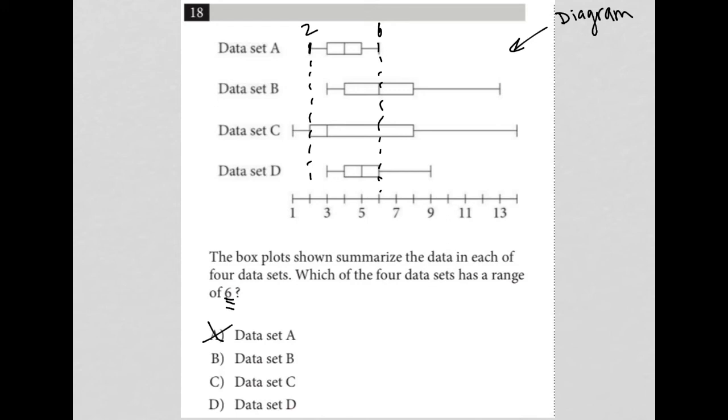Data set B lines up with three. And the highest value lines up with 13, which is a distance of 10, right? Between three to 13, we get 10. So that's also not six, so choice B is gone.